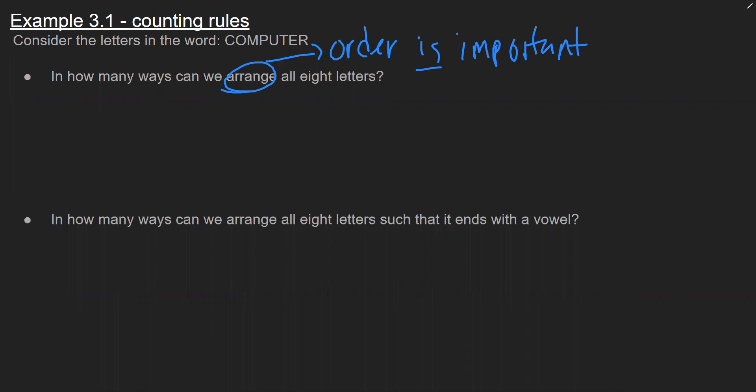which for me implies that the order is important. Because if I switch places of the two letters, for example the T and the E and then I have an E and a T, well those are different arrangements. Now we do have a counting rule but I like to look at it a little bit more graphically, meaning I've got